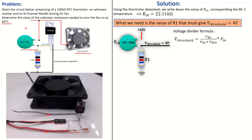The input voltage is 12 volts. Expanding the formula: V-threshold equals I·R1 over I·(R1 + RTH) times V-in. We have unknowns here — we don't know the current I, and we don't know R1. However, it's a series circuit, so the same current flows throughout. Since I appears in both numerator and denominator, we can cancel it out, simplifying our equation considerably.